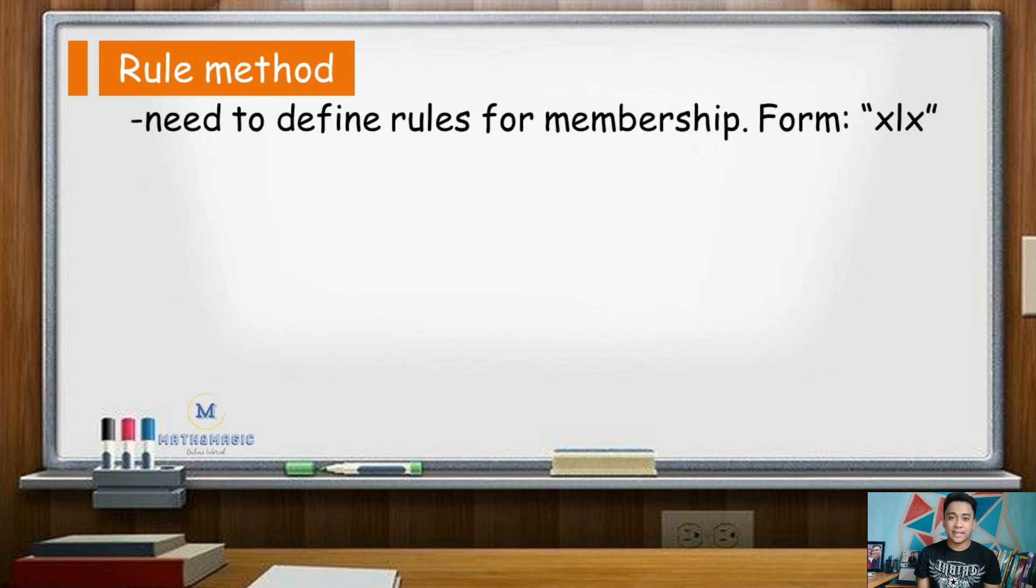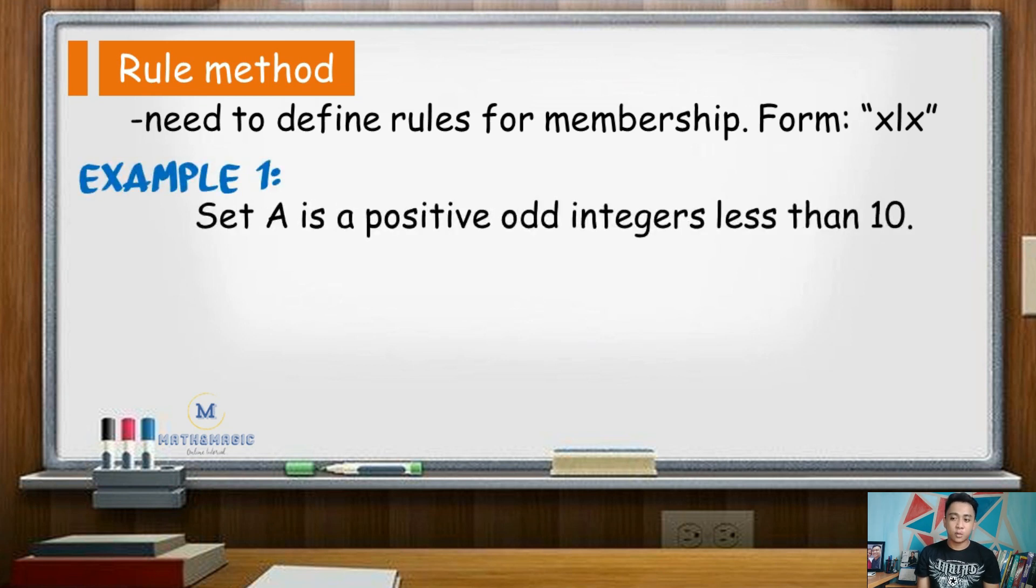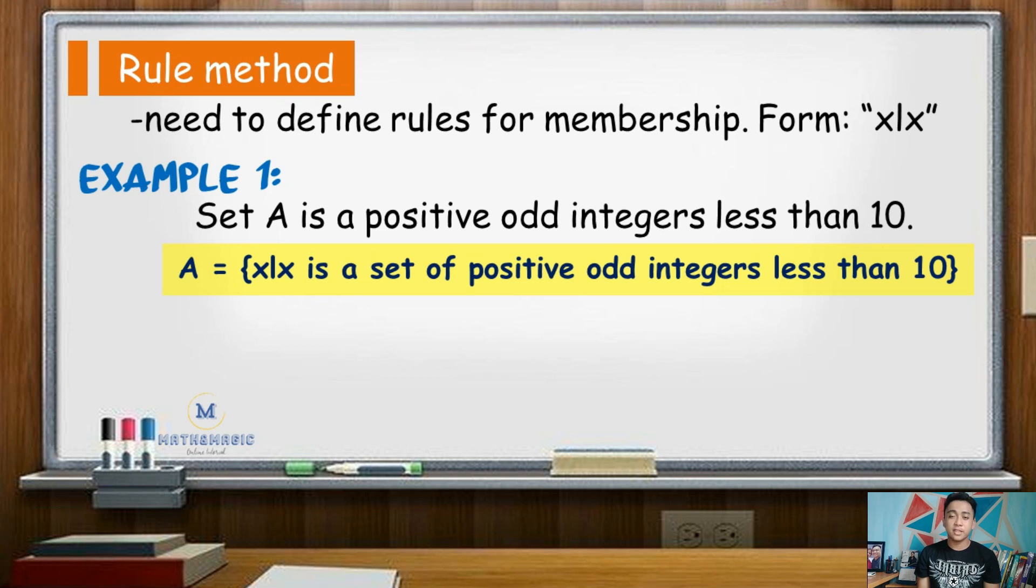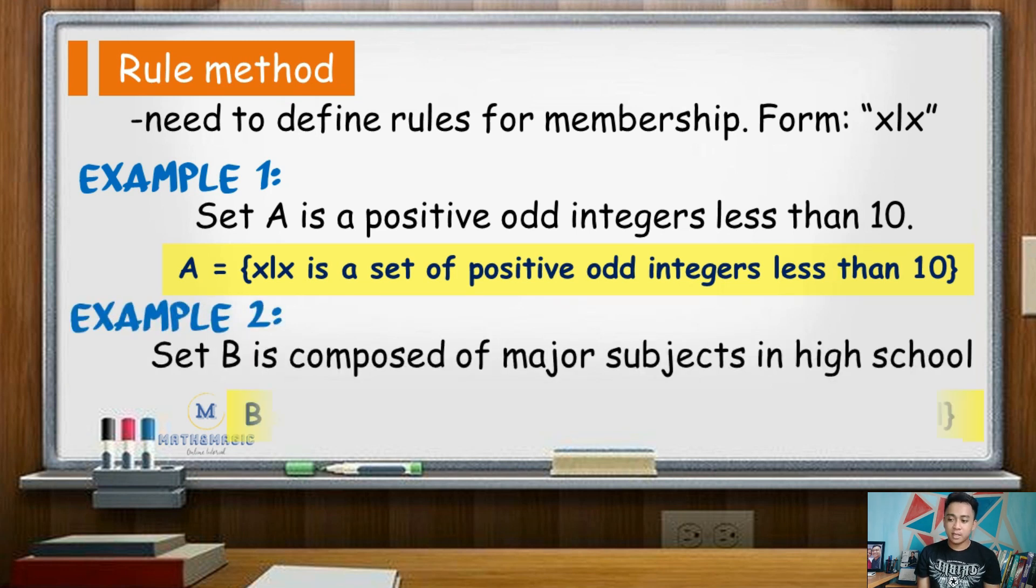Going back to sets A and B, set A be equal to x such that x is a set of positive odd integers less than 10. For set B, it will be set B be equal to x such that x is a set of major subjects in high school.